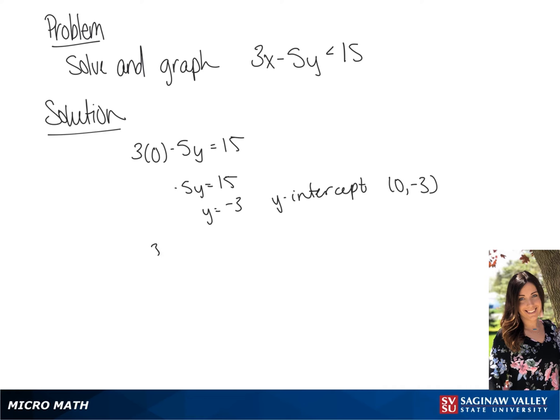Now we're going to find the x-intercept, so we can finish graphing this line. So we have 3x minus 5 times 0 equals 15, so 3x equals 15, and x equals 5. So the x-intercept is going to be 5, 0.